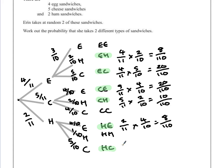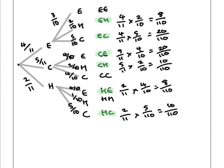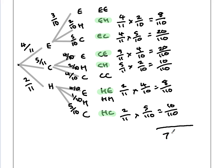Ham and cheese is 2 over 11 multiplied by 5 over 10, which is 10 over 110. All of these probabilities are separate choices and options, so we add them all together to give us our total probability. So we have 8, 20, 20, 10, 8, and 10 — giving us 76 out of 110.